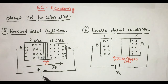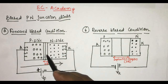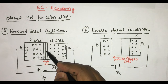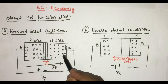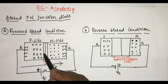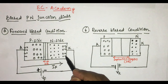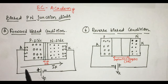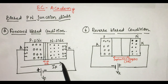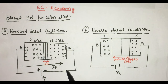Due to this, the depletion width becomes narrow and the barrier potential reduces. When the applied voltage is gradually increased, the barrier potential becomes very less and the depletion region disappears. Then the electrons from inside are attracted towards the p side and the holes from the p side are attracted towards the inside, so current flows in the diode from anode to cathode. You can see the direction here. This current is known as the forward current and the applied voltage is called the forward voltage, denoted by VF. The forward current is denoted by IF.